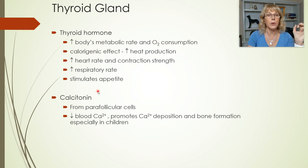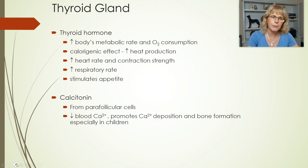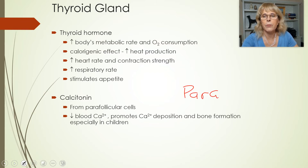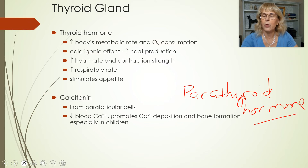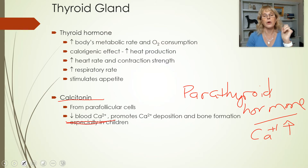The other hormone that the thyroid gland makes is called calcitonin. And as its name implies, it is important for regulating blood calcium levels. Calcitonin is the opposite — the nemesis — of parathyroid hormone. Parathyroid hormone is a hormone made by the parathyroid glands, and it causes calcium levels to go up. Calcitonin causes calcium levels in the blood to go down. So they are opposites of each other.